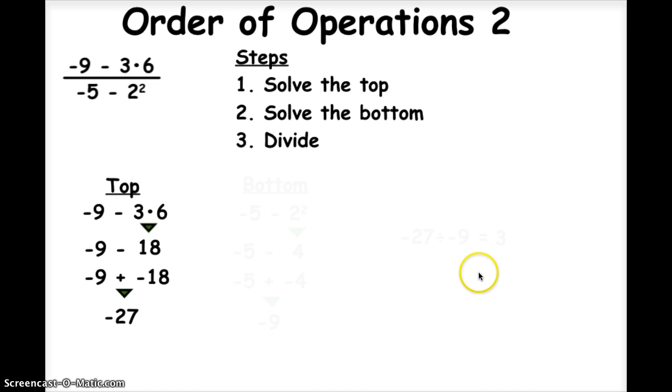Now, let's solve the bottom. The bottom expression is negative 5 minus 2 squared. The first thing I'm going to do is exponents, because that comes before subtraction. So I have 2 squared, which is going to be 4, and the rest of the problem is going to stay the same.